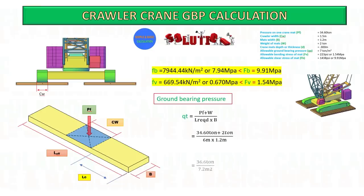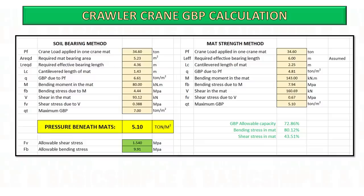The ground bearing pressure result is: point load on the mats plus weight of the mat, divided by the assumed length times width of the mat. This is the summary of the results for the soil bearing method and mat strength method, sourced from the reference shown below.